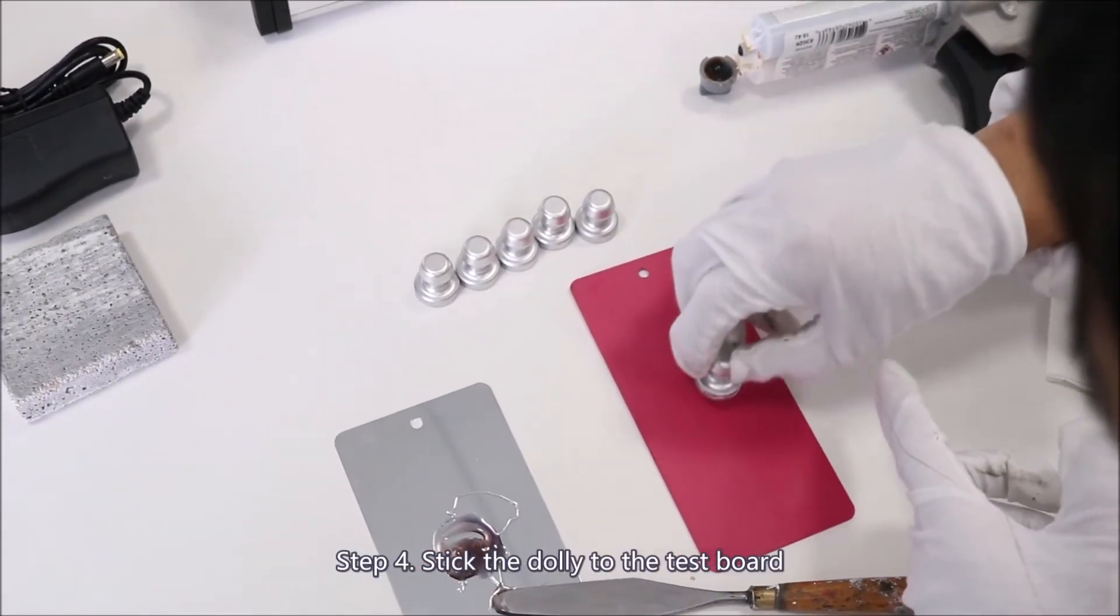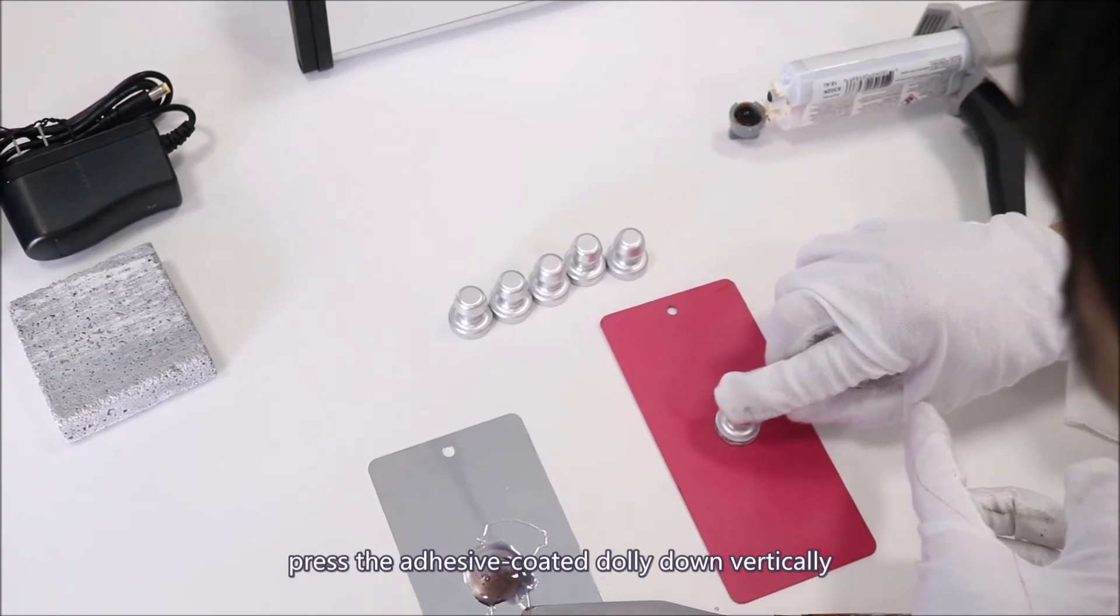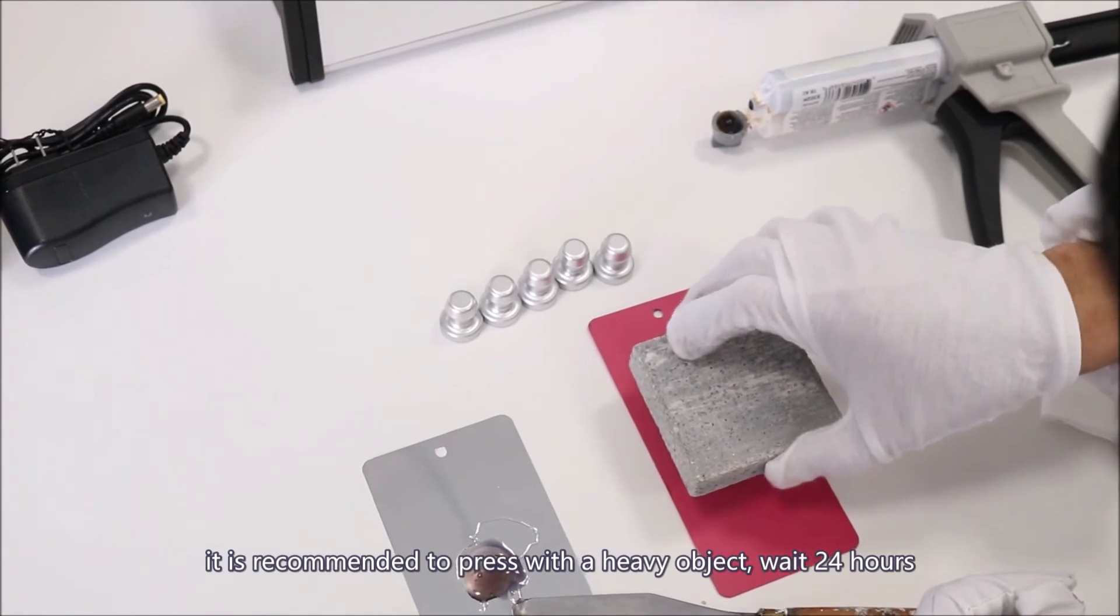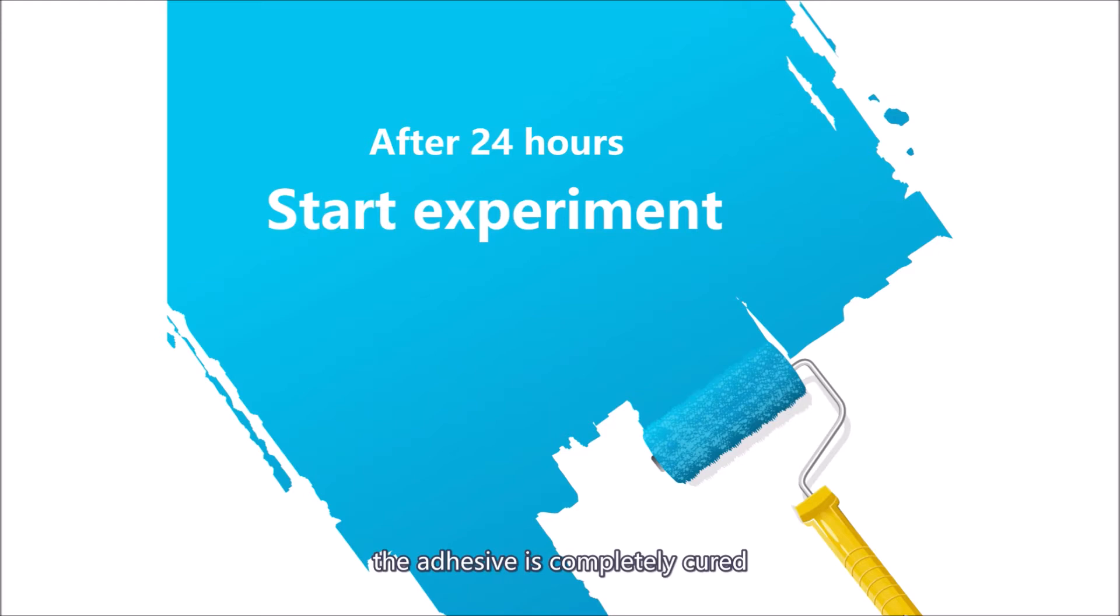Step 4: Stick the dolly to the test board. Press the adhesive coated dolly down vertically. Try to hold it in place. Do not move or rotate. It is recommended to press with a heavy object. Wait 24 hours. The adhesive is completely cured.